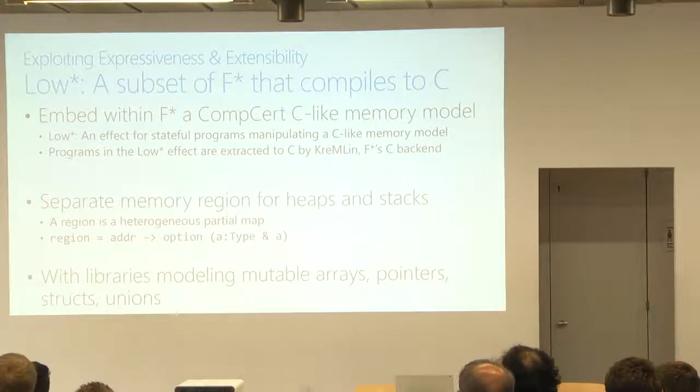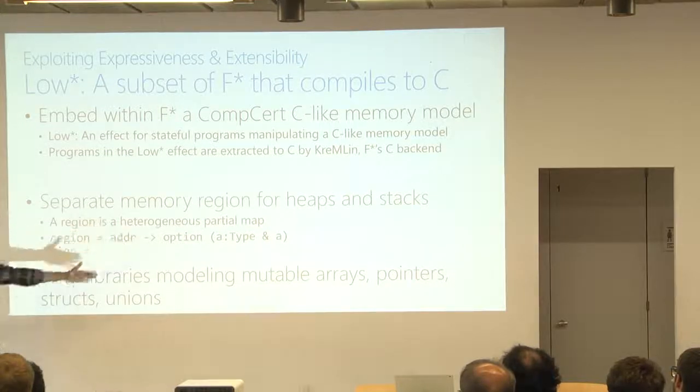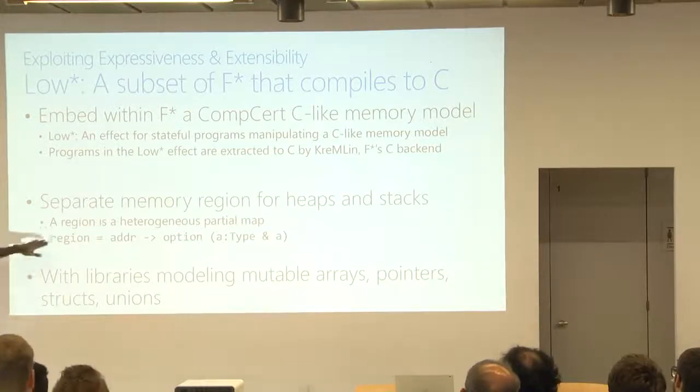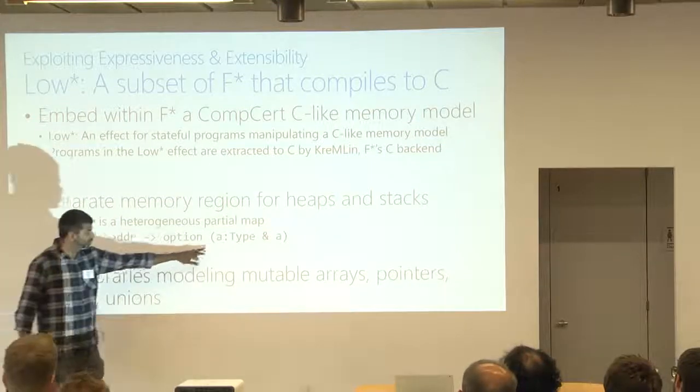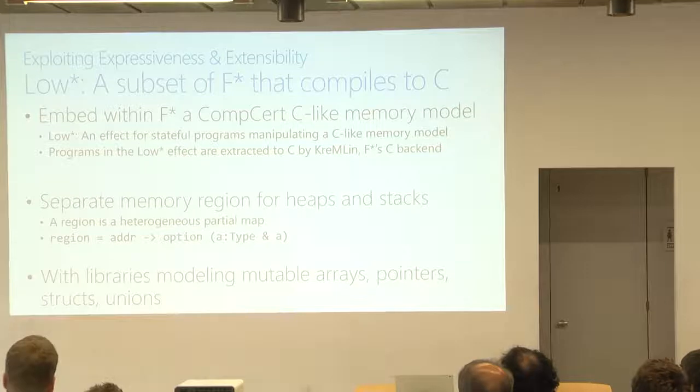So we embed inside F-star a C-like programming model, where it's a state monad, but the state is a representation of a comp-cert C-like memory model, where we have separate regions for heaps and stacks, and a region you can think of it as a map, a partial map from addresses to values of any type. So this is a heterogeneous map from addresses to values. And here, just to emphasize, being able to express this is essentially relying on a lot of dependent type theory. It's using higher universes, it's using sigma types. So in order to express that, we need dependent type theory.